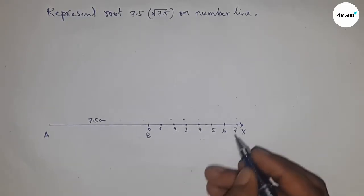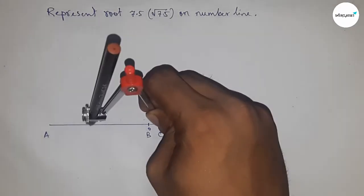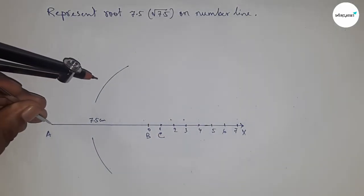Next, having to bisect the line AC. So taking greater than half of AC and drawing arcs by this way. And with the same length, putting the compass here and cutting the arcs.